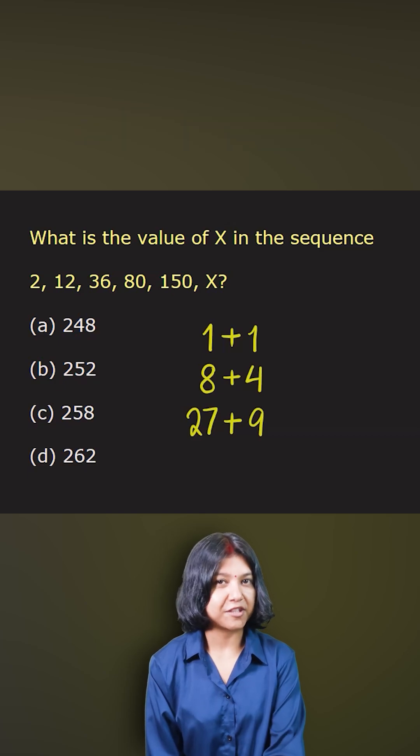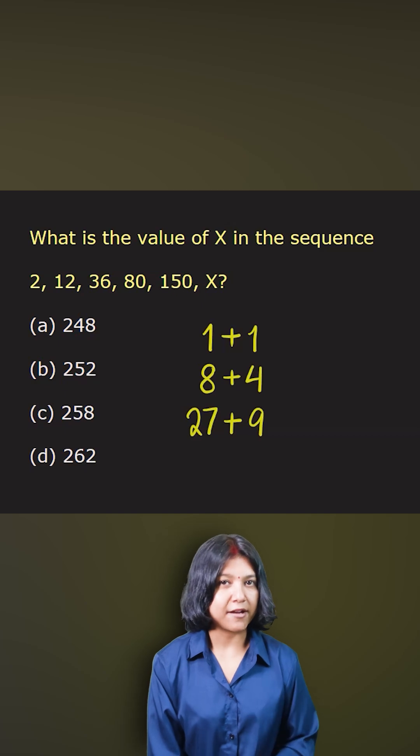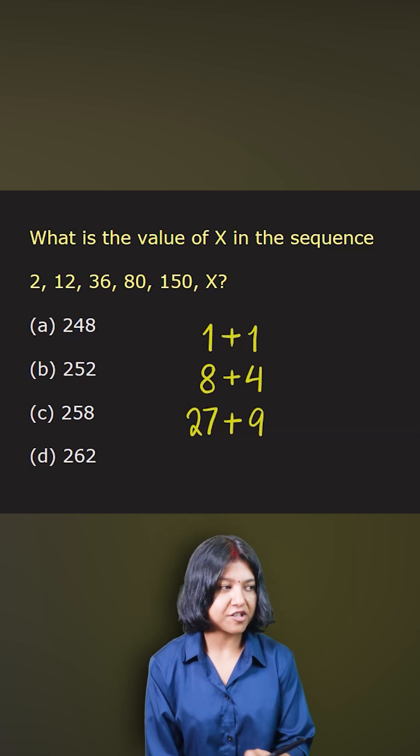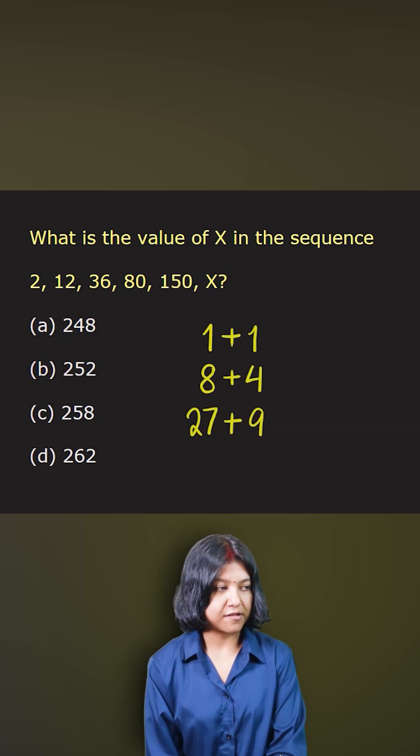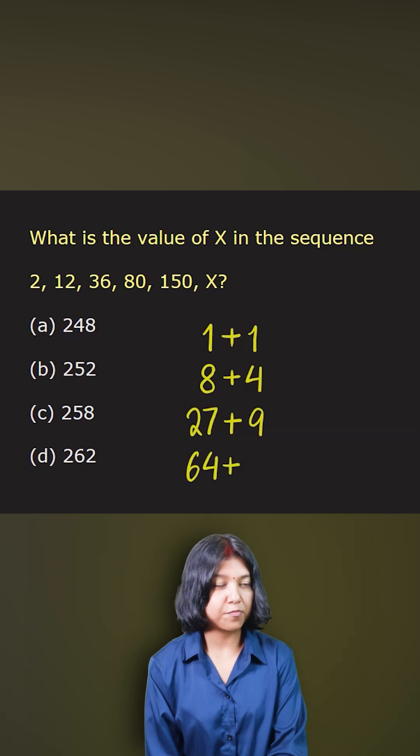The cube of 4 is 64, so 64 plus the square of 4 is 16, so 64 plus 16 is 80. We have landed on getting the pattern here.